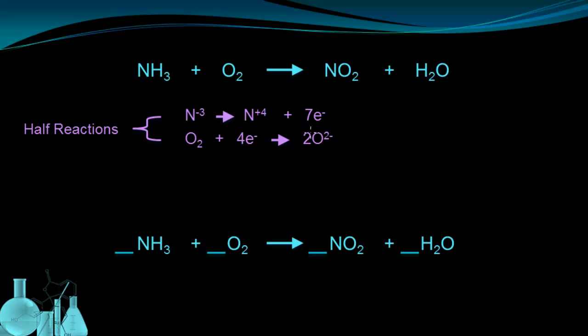Because I already have the half-reactions written, I can see that my issue comes from the seven electrons being lost in the oxidation, and four electrons being gained in the reduction. There's my imbalance.